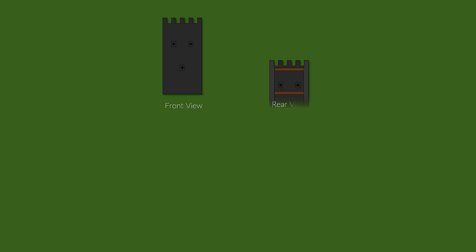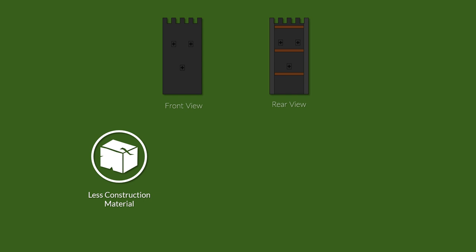When it comes to towers, we think of them as enclosed buildings, but this wasn't necessarily so. There were towers that were open at the back. This actually had several advantages: less construction material was required, thus they were cheaper; it was easier to haul supplies in and out of the tower; and if the tower was captured by the enemy, it provided only a limited amount of protection.